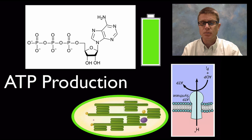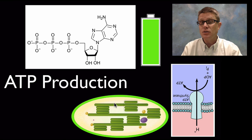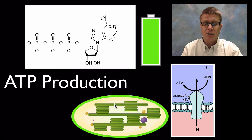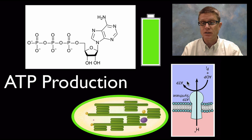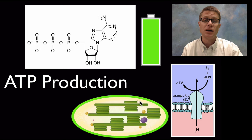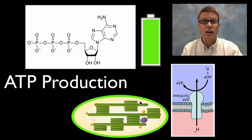Plants also produce ATP on the thylakoid membrane inside the chloroplast, using light energy. In plants, hydrogen protons are on the inside of the thylakoid membrane, and as they flow out that makes ATP. That ATP is then used out in the Calvin cycle to make sugars. Plants also have mitochondria, so they can break down that sugar and make more ATP.